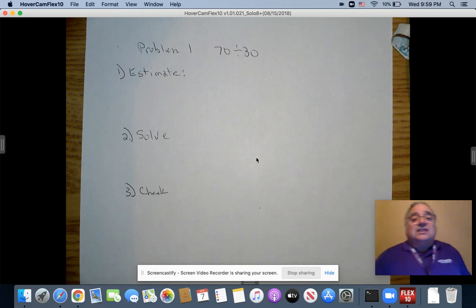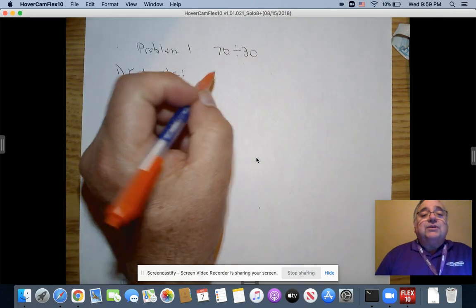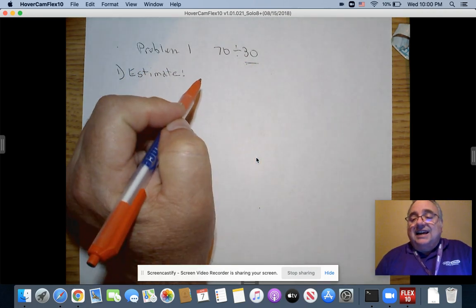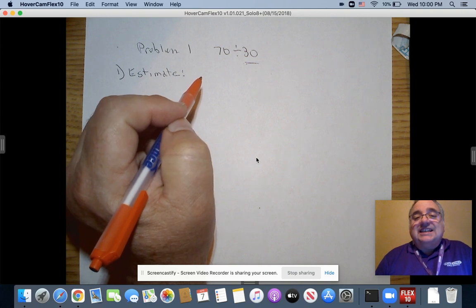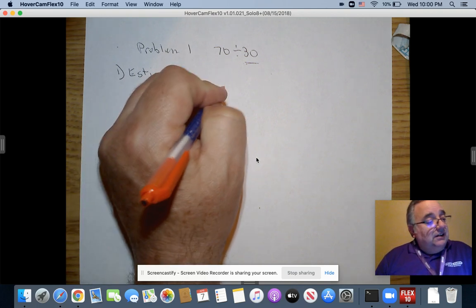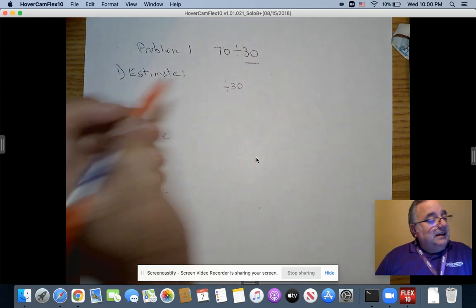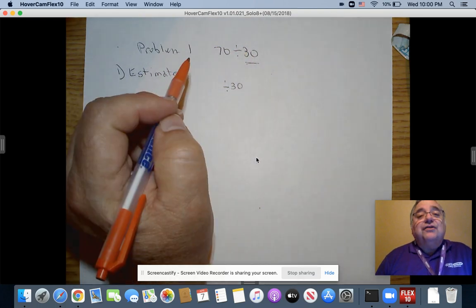Now we're going to go ahead and take the estimate. And we always start off with the quotient. And the quotient is already in a multiple of 10, so it's 30. So I'm going to take a look at this.